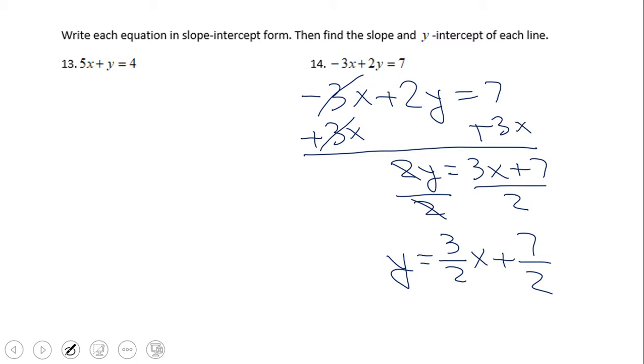So this is the answer for number 14, and obviously now we can see the slope. The slope is the number that goes by the x, that's 3 halves, and the y-intercept obviously is 7 halves.